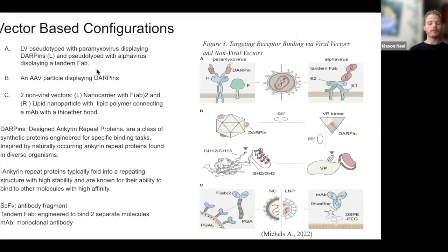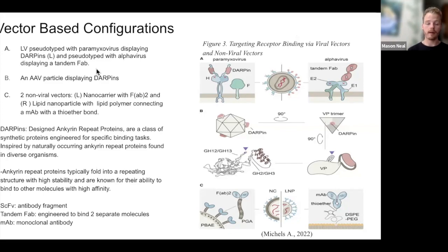Something I want to mention are DARPINs — designed ankyrin repeat proteins — which are a class of synthetic proteins engineered for specific binding tasks, giving them very high specificity. Some other binders mentioned are SCFVs, tandem FABs, and MABs, which we have discussed in this class.